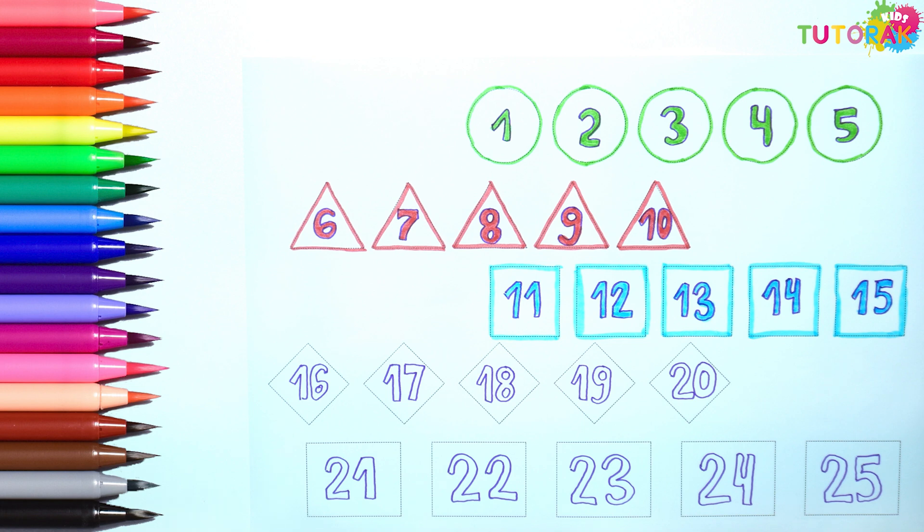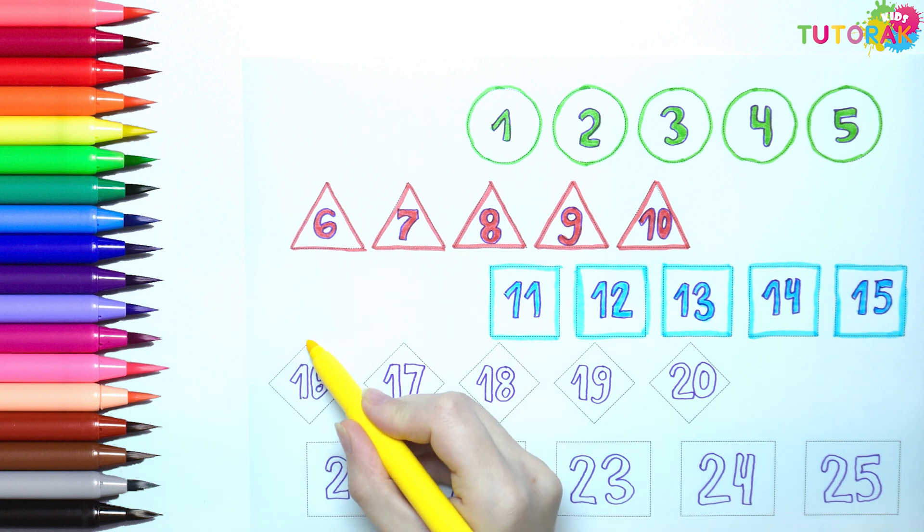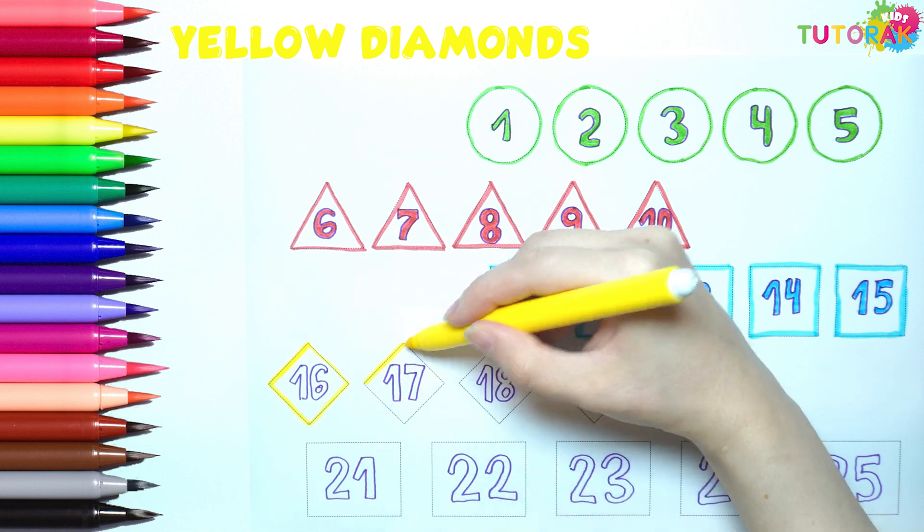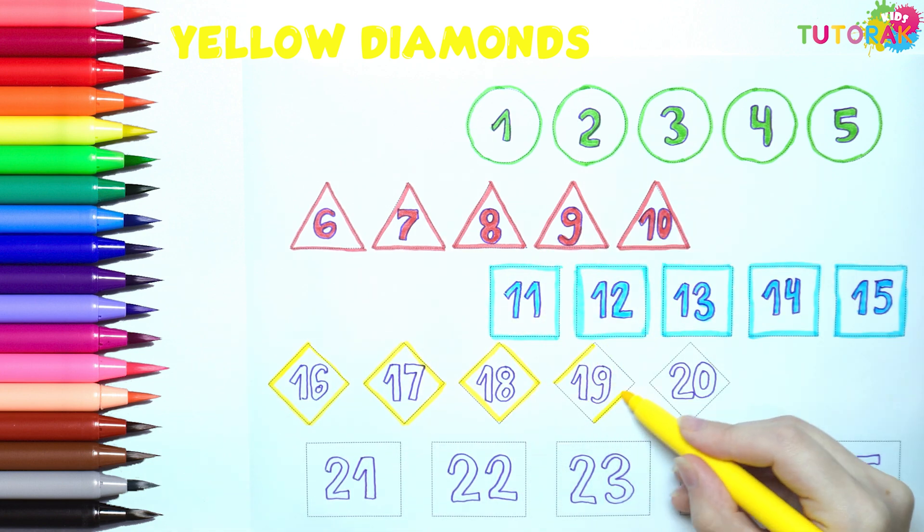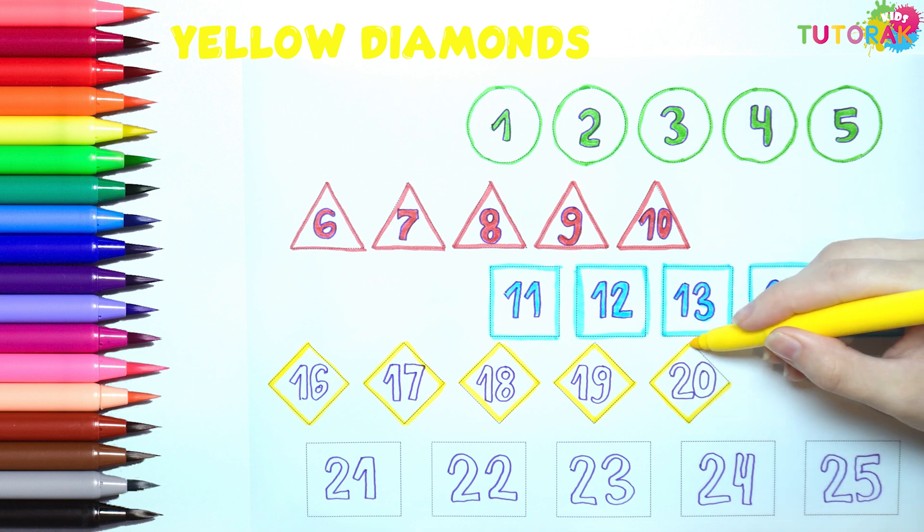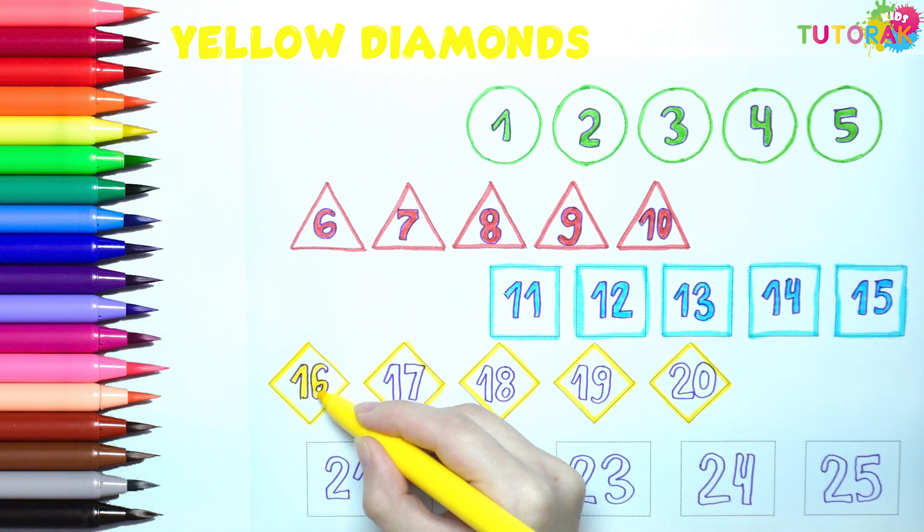The next shape is a diamond. We have 1, 2, 3, 4, 5. 5 yellow diamonds.